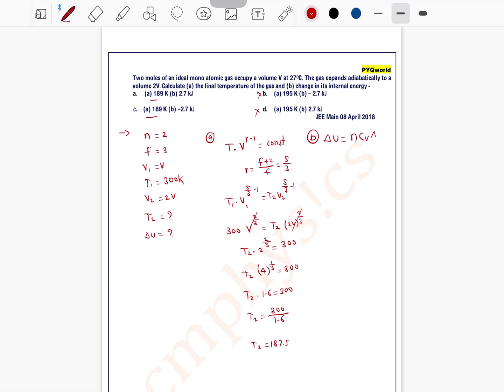Now see, initial temperature is 300, final temperature is 187. So delta T is negative. Without solving, we are getting delta T as negative. So delta U is negative, means option C is the correct one.